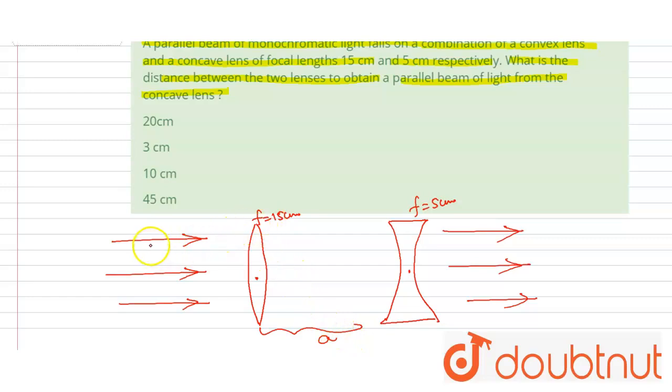We know that if a parallel ray will come and it falls on a convex lens, then it will converge at the focal length. So the ray will converge at the focal length. And for the concave lens, we know that if a source is put at the focal length, then after passing through the lens, the ray will go parallel.